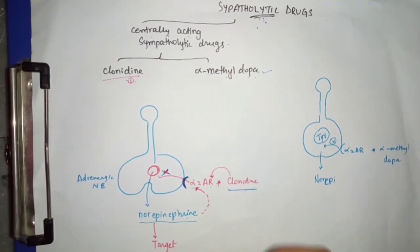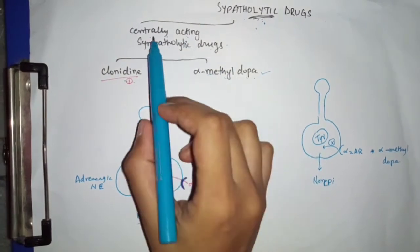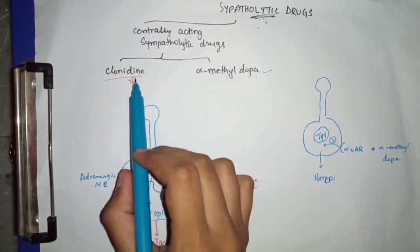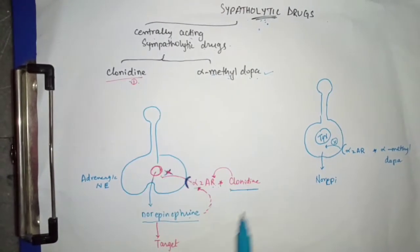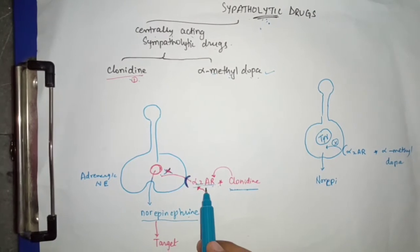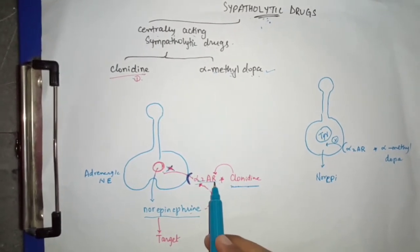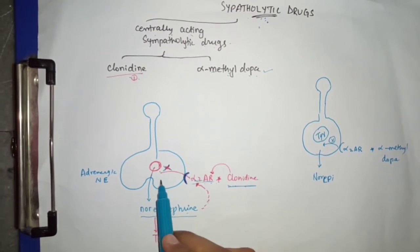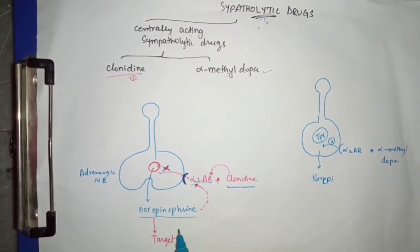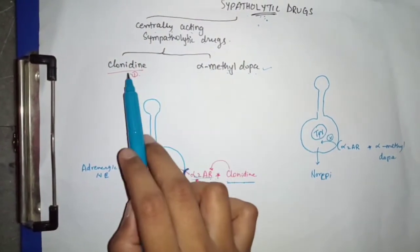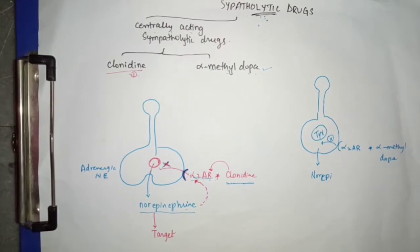Now for the mechanism of action — among centrally acting sympatholytic drugs we have clonidine and alpha methyl dopa. Clonidine is a stimulator of the alpha-2 adrenergic receptor. When the alpha-2 adrenergic receptor is stimulated by clonidine, this leads to inhibition of norepinephrine release, the sympathetic response is reduced, and blood pressure is reduced.